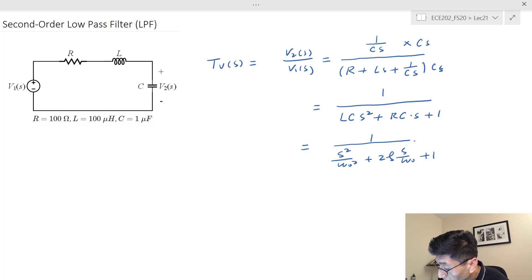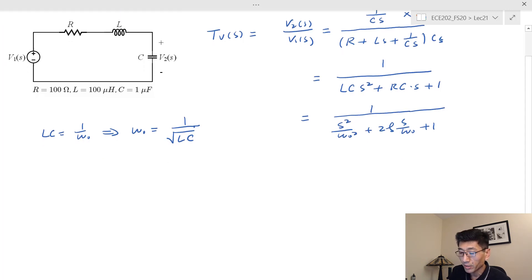If we compare, we can determine what the natural resonant frequency is. We compare: LC equals 1 over ω₀², so ω₀ equals 1 over square root LC.